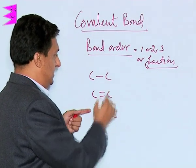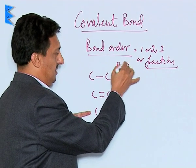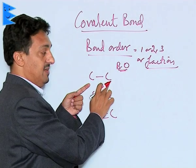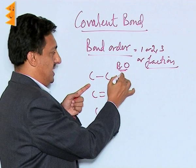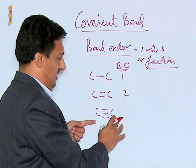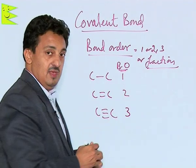When two carbon atoms have a single bond between them, the bond order is 1. When they have a double bond it is 2, and when they have a triple bond it is 3.